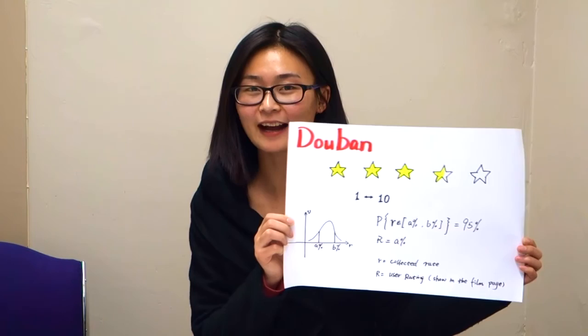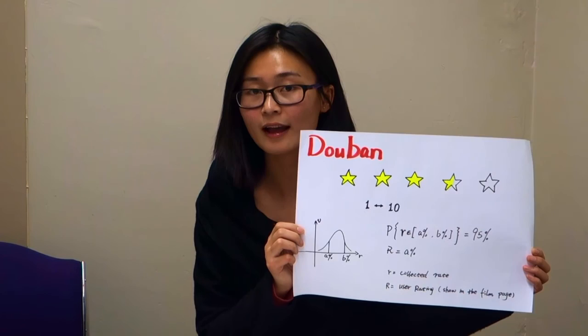This formula provides a true Bayesian estimate, which takes into account the number of votes each title received, the minimum votes required to be on the list, and the minimum votes for all titles. As for Douban's method: first, we calculate the feedback for every user, then we calculate the confidence interval.